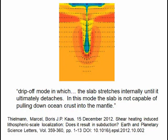If runaway subduction did start, it was supposed to pull the plates with it. Unfortunately, the type of subduction in catastrophic plate tectonics is similar to drip-off mode in which the slab stretches internally until it ultimately detaches. In this mode, the slab is not capable of pulling down ocean crust into the mantle.